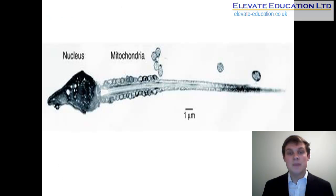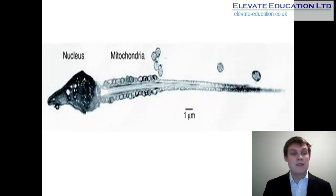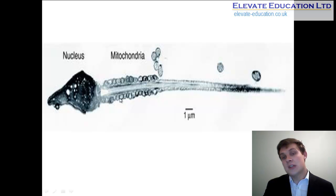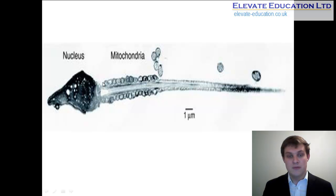If we look at this micrograph of a sperm cell, it clearly shows the acrosome located at the head of the sperm, large areas of mitochondria around the base of the tail, and the long projecting undulipodium that enables the sperm to move.